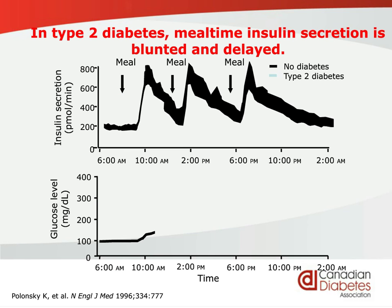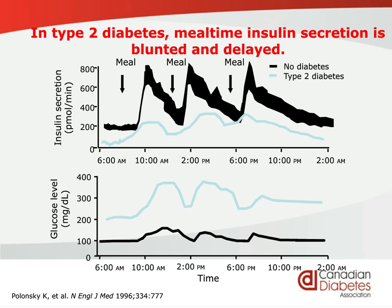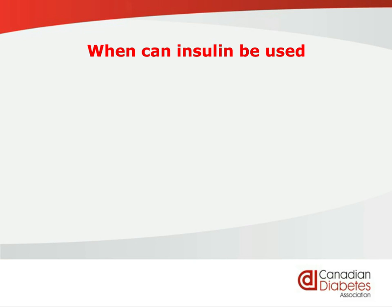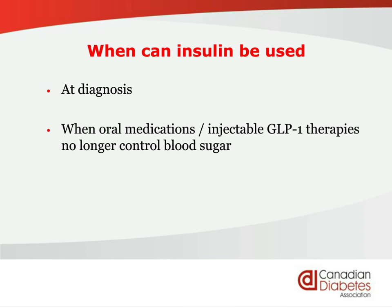In type 2 diabetes, insulin is not released rapidly after a meal — it's released more slowly, is delayed, and doesn't go as high. Because of that, the person loses what's called first-phase insulin release, and blood sugars get high and stay high. Insulin can be used at diagnosis — the quicker you get blood sugar under control, the better for your beta cells, because having high blood sugar destroys more of those cells that produce insulin. It can also be used when oral medication or injectable GLP-1s are no longer controlling blood sugar, when you're sick and in hospital, or at any time that you want better control.